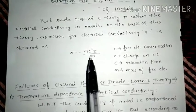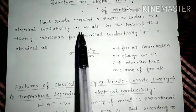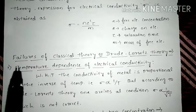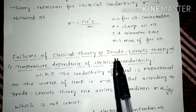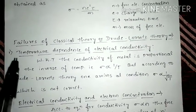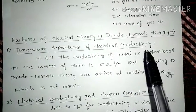Alright, so this expression we already studied. But this Paul Drude theory or the classical theory has some failures. So if we look at those failures of classical theory or Drude-Lorentz theory, the first failure is temperature dependence of electrical conductivity.